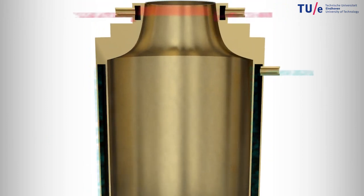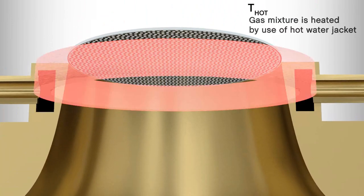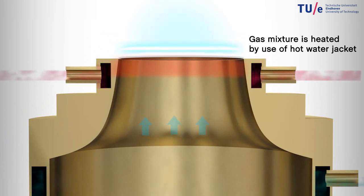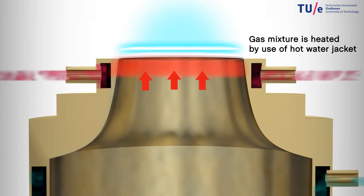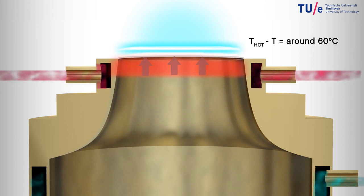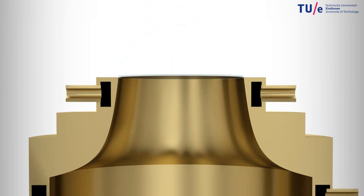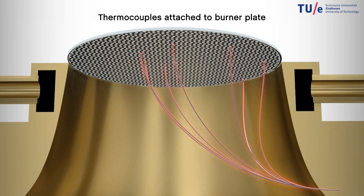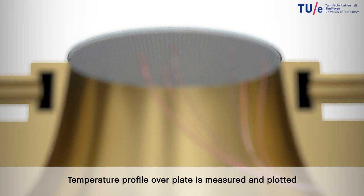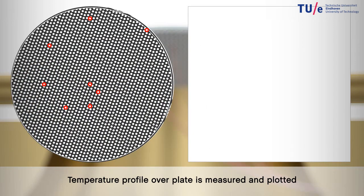The gas mixture is also heated by use of a hot water jacket. For the planar burner stabilized flame, thermocouples are attached to the burner plate and the temperature profile over the plate is measured and plotted.